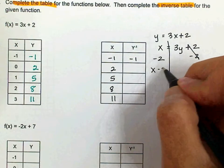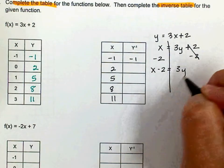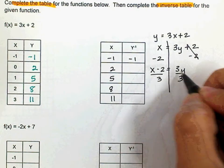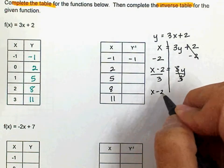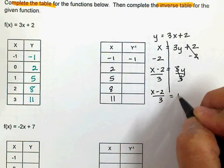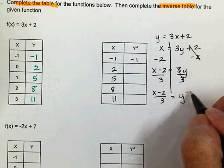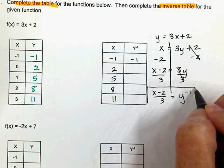So, x minus 2 is equal to 3y. Now, what? Divide by three. That cancel. So, x minus 2 divided by 3 is equal to y. Now, what do I add? Negative one.